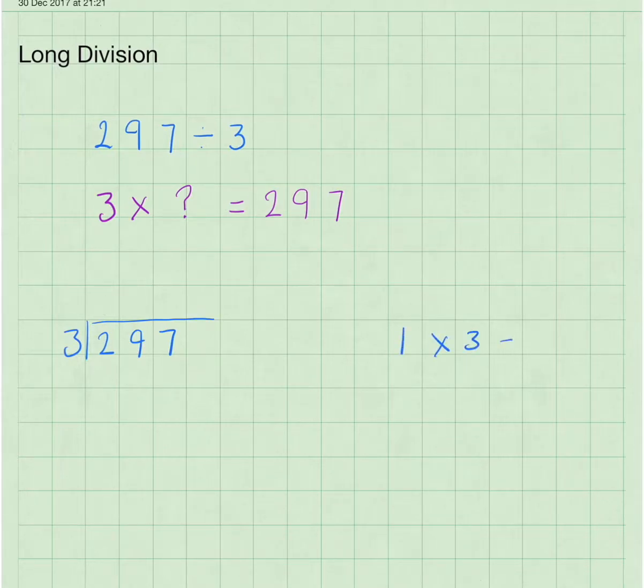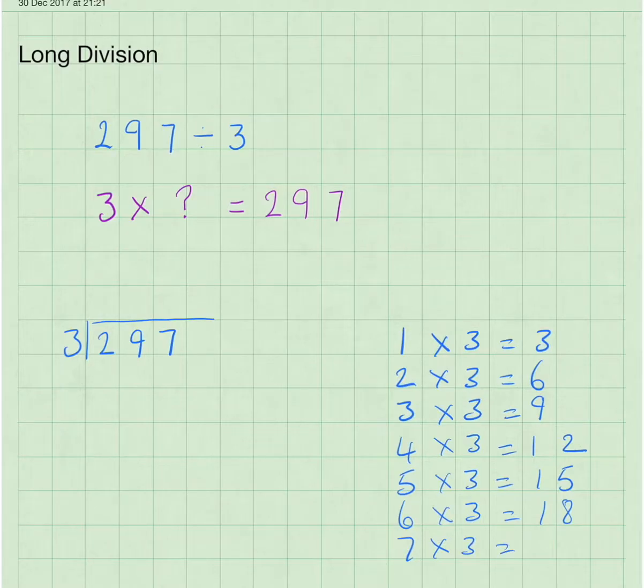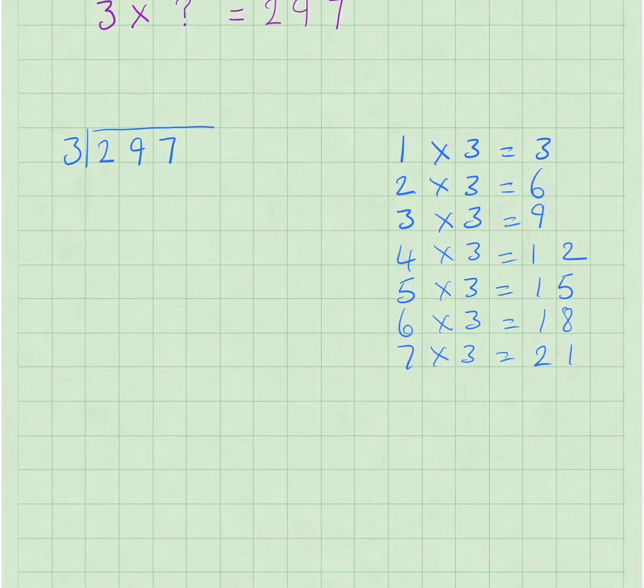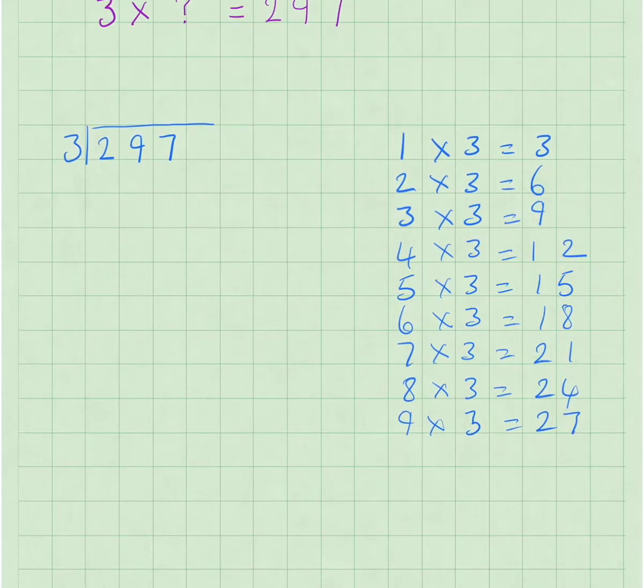Once times 3 equals 3, 2 times 3 equals 6, 3 times 3 equals 9, 4 times 3 equals 12, 5 times 3 equals 15, 6 times 3 equals 18, 7 times 3 equals 21, 8 times 3 equals 24, and 9 times 3 equals 27. We can probably go a bit further, 10 times 3 equals 30, so we're ready to start with our division now.